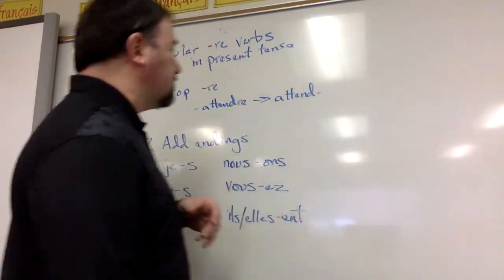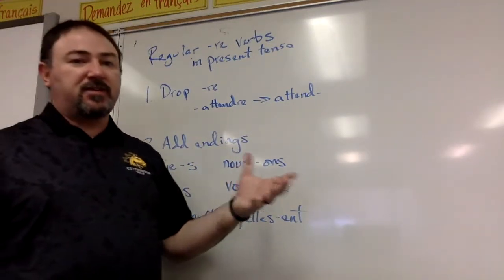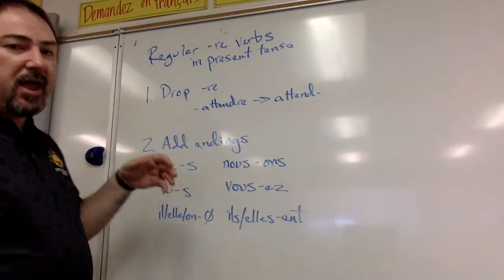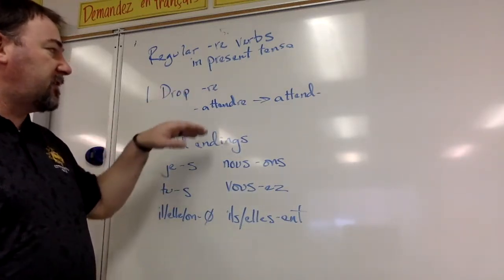The pattern to conjugate them in present tense is as follows: you take the infinitive—the infinitive is the unconjugated form of the verb—and then you drop the RE off of the infinitive.